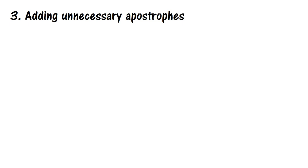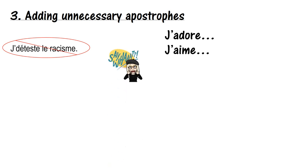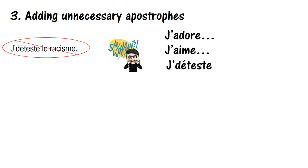Coming in at number three: adding unnecessary apostrophes. For example, I've seen 'J'apostrophe déteste le racisme' — the apostrophe is not actually needed. I understand why people do this with 'je déteste,' because if we look at j'adore and j'aime, we've got an apostrophe. So why can't I say 'je déteste' with an apostrophe?